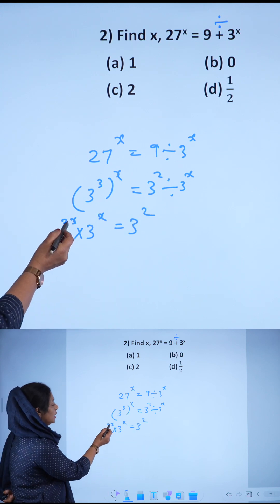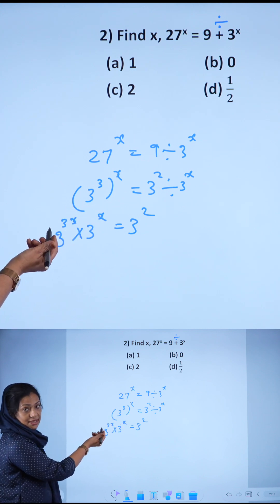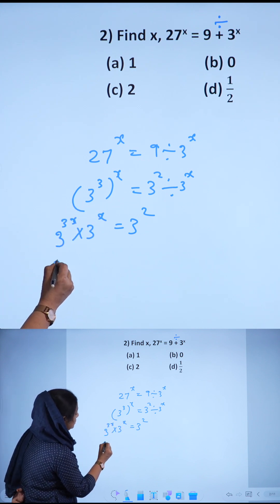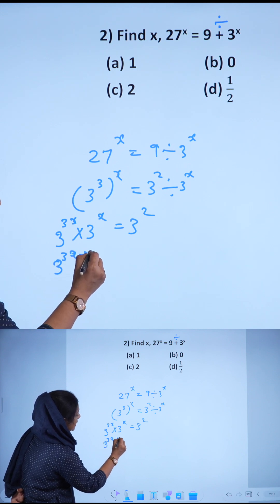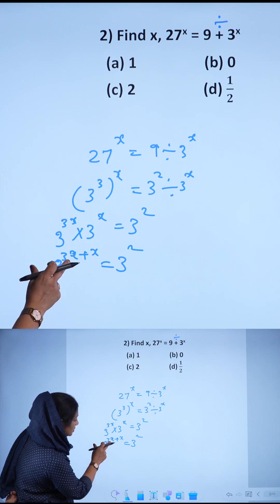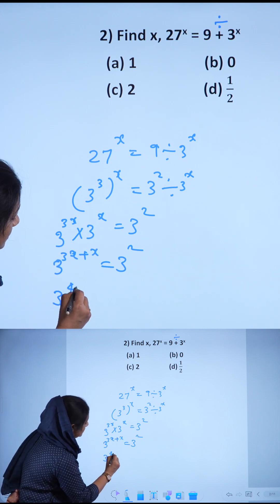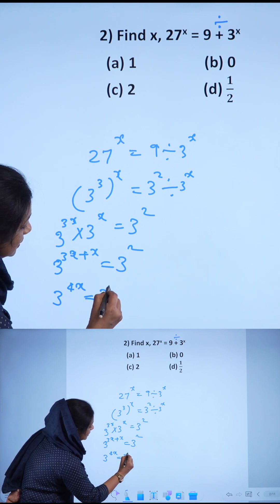Then 3 raised to 3x times x raised to n means x raised to m plus n. So 3 raised to 3x plus x equals 3 raised to 4x, which equals 3 squared.